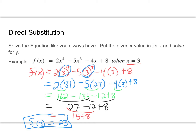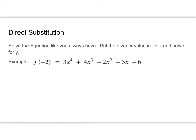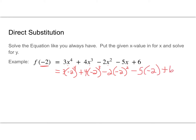Let's take a look at another one. In this case, I give you function notation. When I see the negative 2 in there, that says I'm going to put negative 2 in for all the x's. So we're going to have 3 times negative 2 to the 4th, plus 4 times negative 2 cubed, minus 2 times negative 2 squared, minus 5 times negative 2, plus 6 — just replacing x with negative 2.